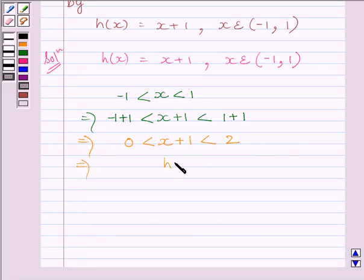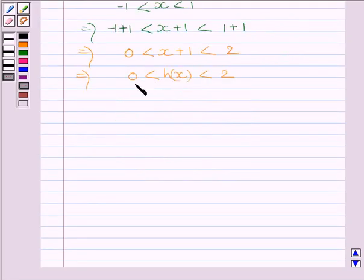We know 1 plus 1 is equal to 2 and minus 1 plus 1 is equal to 0. Now we know x plus 1 is equal to h(x). So we can write h(x) is greater than 0 and less than 2.